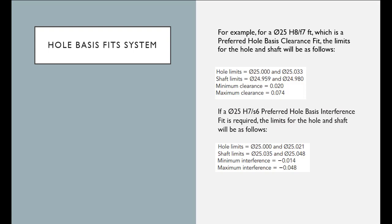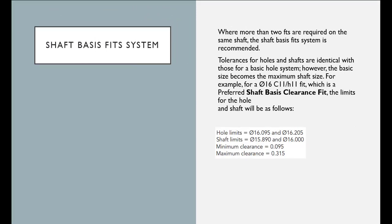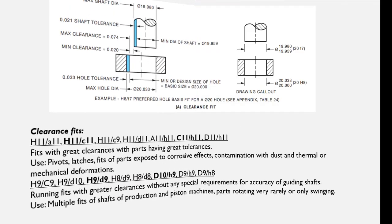The desired clearances and interferences are achieved by combinations of various shaft tolerance zones with the hole tolerance zone. Capital H is used in this system of tolerances and fits — the lower deviation of the hole is always equal to zero. In the shaft system, the upper deviation of the hole is always equal to zero.